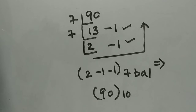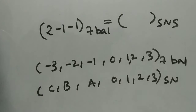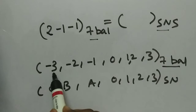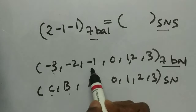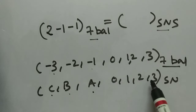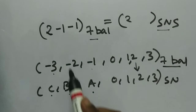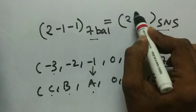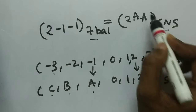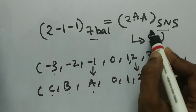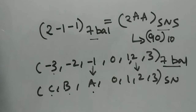Now we convert 2, −1, −1 in balanced base 7 into SNS. Looking at the mapping: −3 is C, −2 is B, −1 is A, and the rest are the same. So 2 stays as 2, and each −1 becomes A. Therefore 2 A A in SNS represents 90 in decimal. This is how you convert special number systems into known number systems and back.